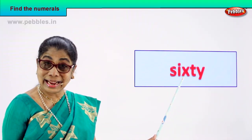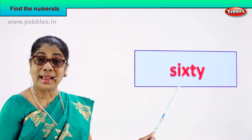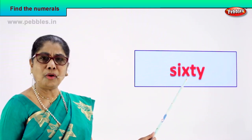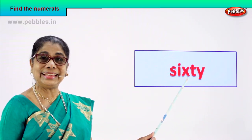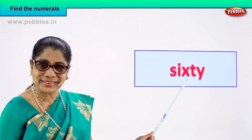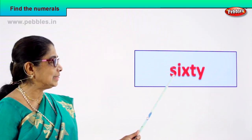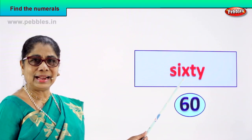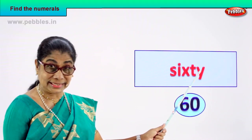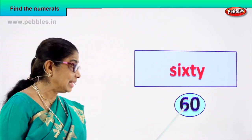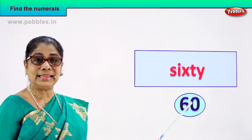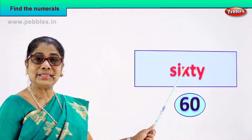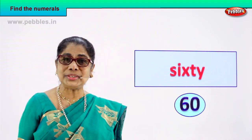Let's take the next number name. Look — read this: S-I-X-T-Y, 60. How do you write the numeral? 6 and 0 — 60. S-I-X-T-Y, 60, 6 and 0 — 60. This is the numeral for this number name. Very good!